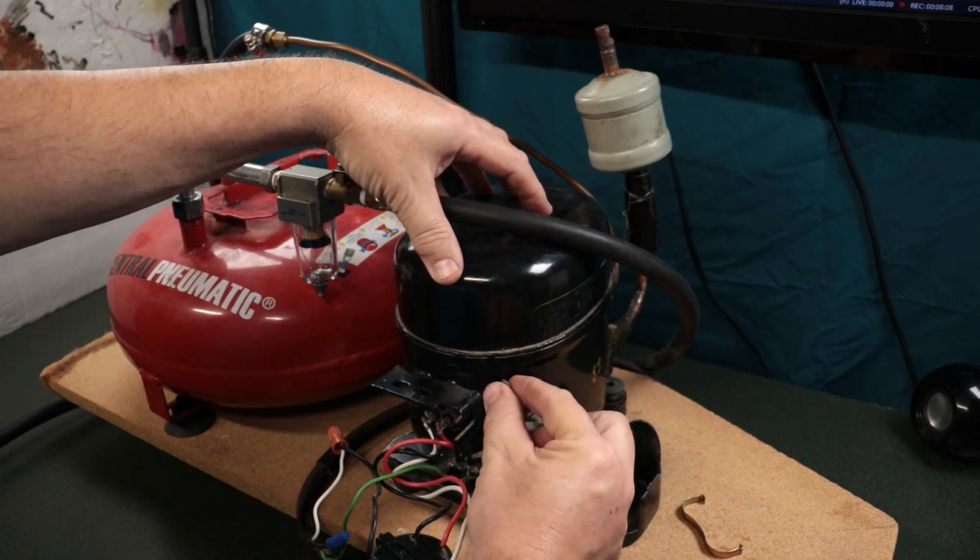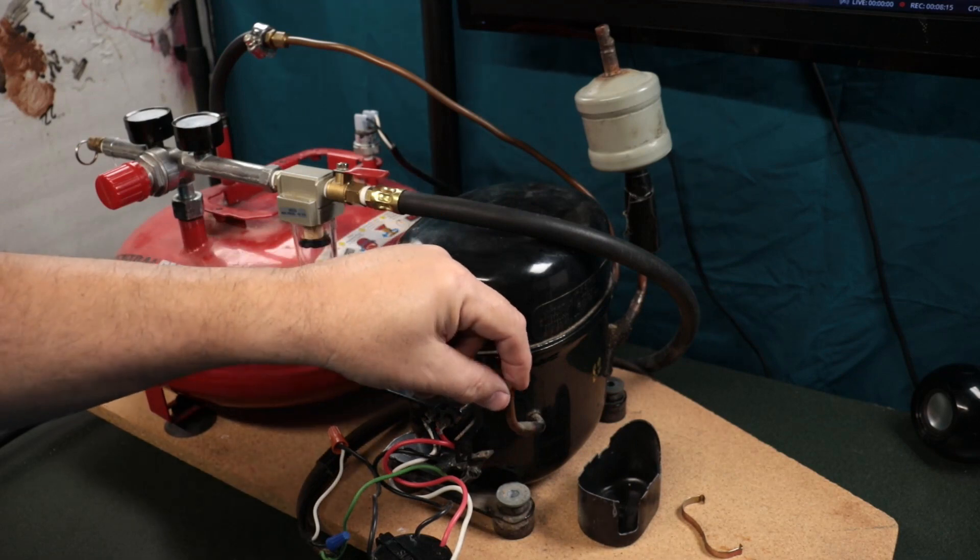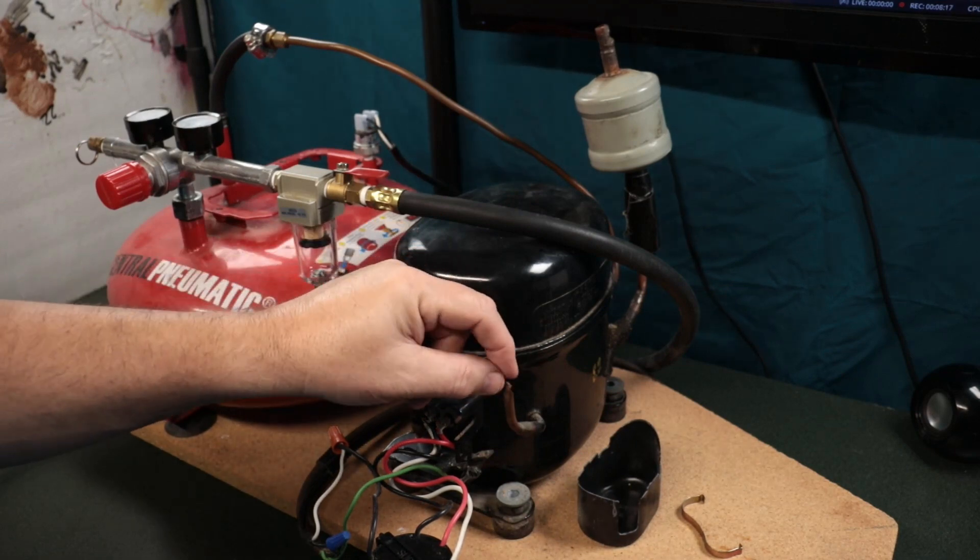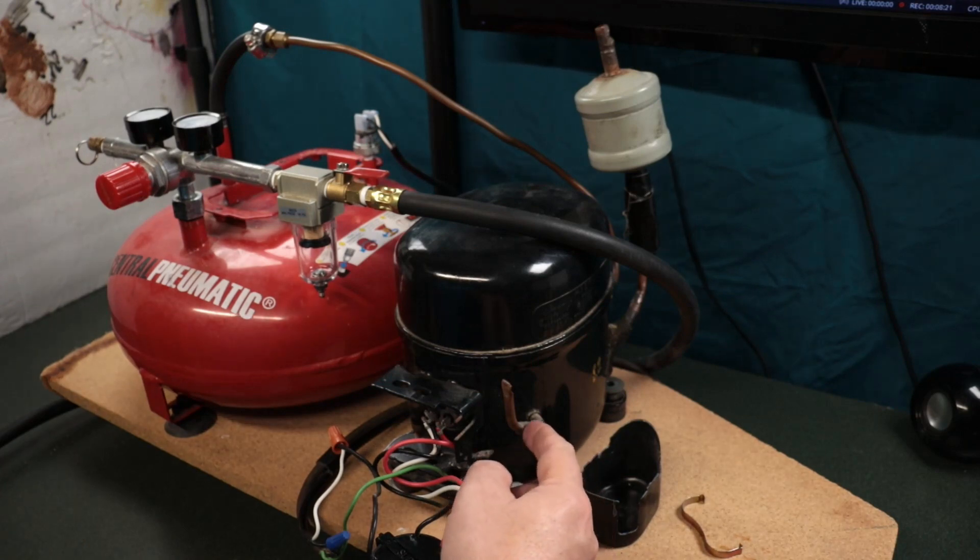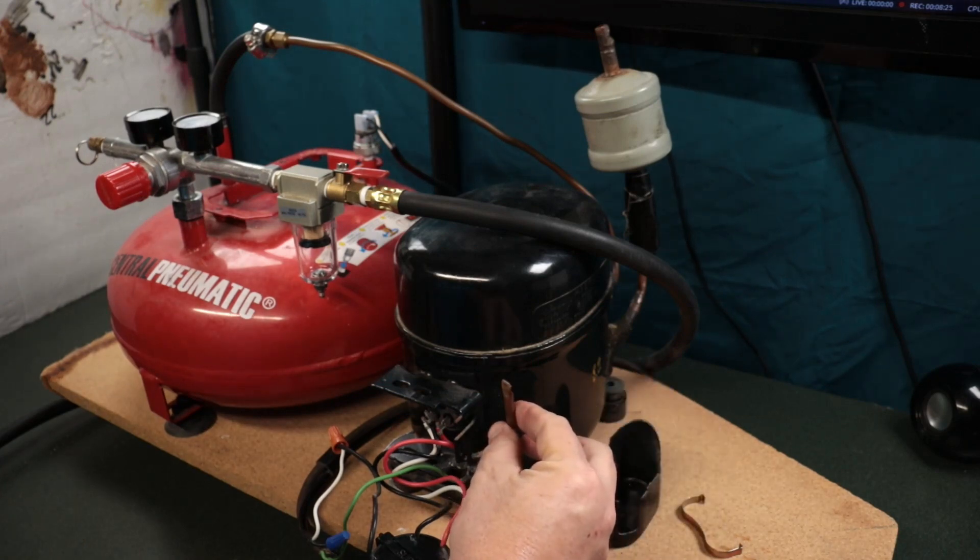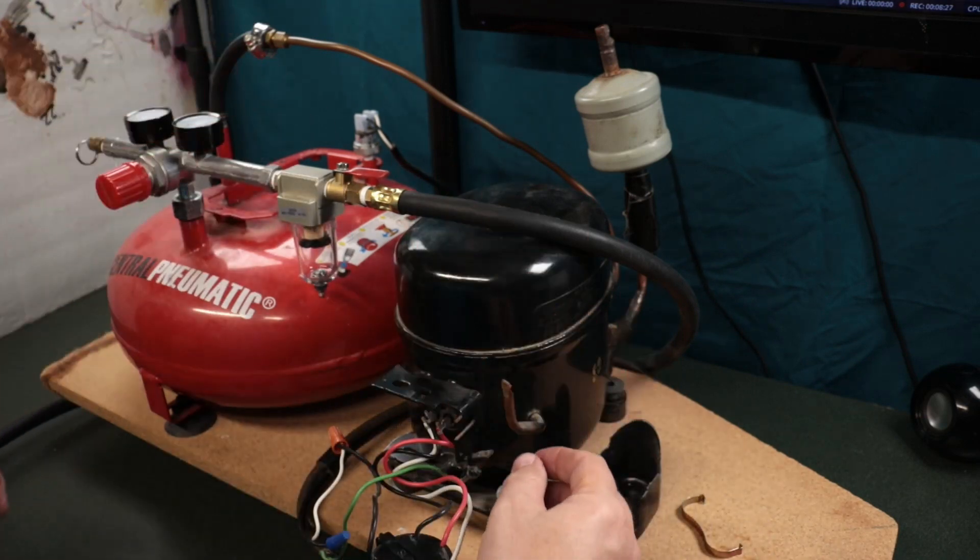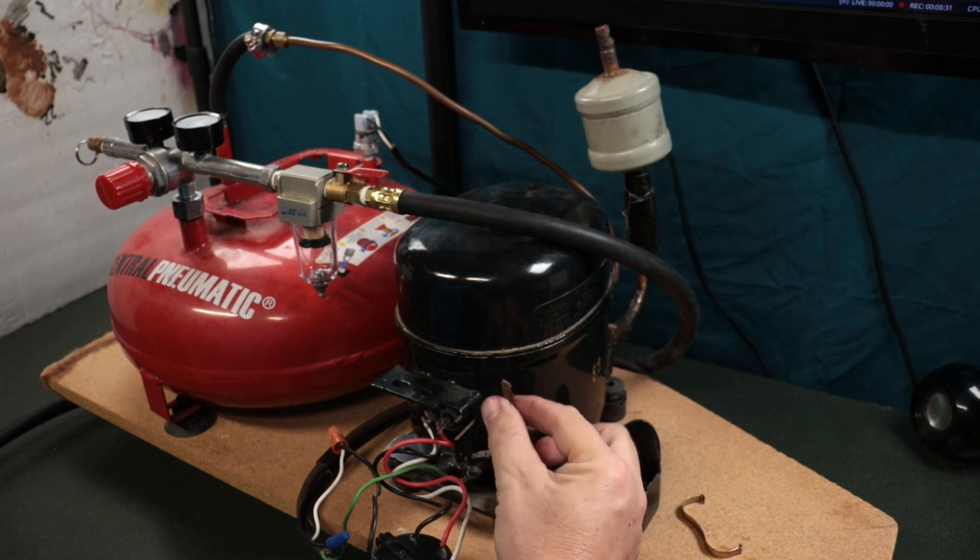By the way this other copper line right here. This is a service port. It's just a little stub out that the manufacturer left. It's crimped off and there's nothing going on there. In the event that a service technician wanted to put a port on there to recharge it, if it had a leak or anything like that, they could put a port on there to recharge that. So you just ignore that.